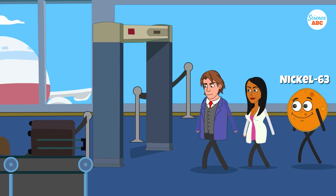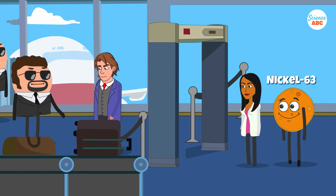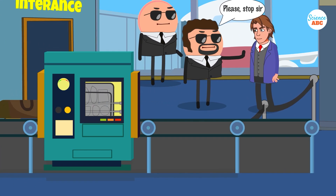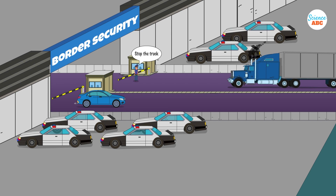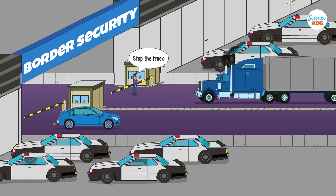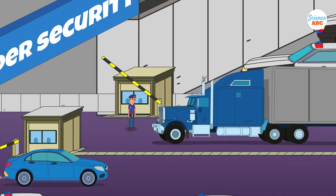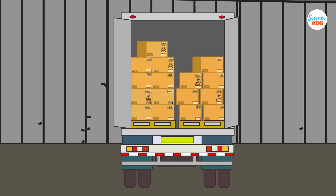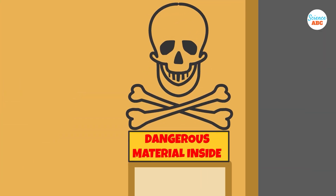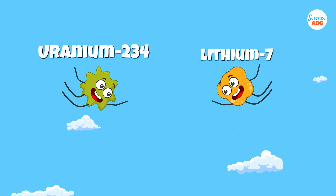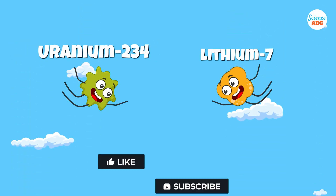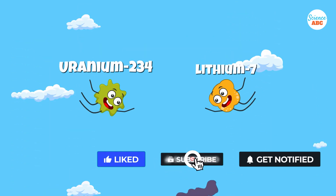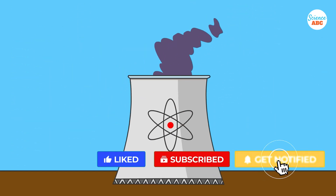For instance, nickel-63 helps airport security officials detect explosives, hazardous chemicals, and vapors. Neutron detectors also aid in identifying the illegal transport of nuclear materials at airports, border crossings, and ports. Additionally, isotopes like uranium-234 and lithium-7 are essential for the smooth functioning of nuclear reactors.